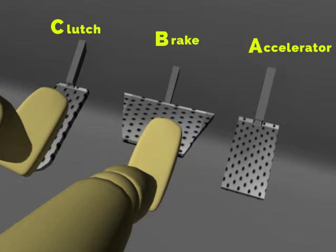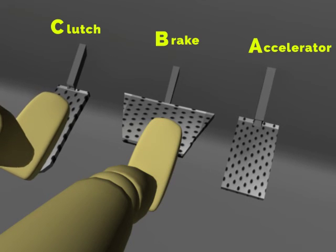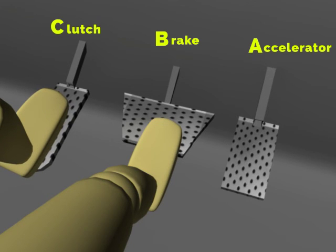The clutch is used for three main purposes: starting, stopping, and shifting. When starting the car, you need to press the clutch and twist the ignition. When pressing the clutch to stop, this disconnects the link between the engine and the tires. To change gears, you need to press the clutch — you cannot change gear if you are not pressing the clutch.